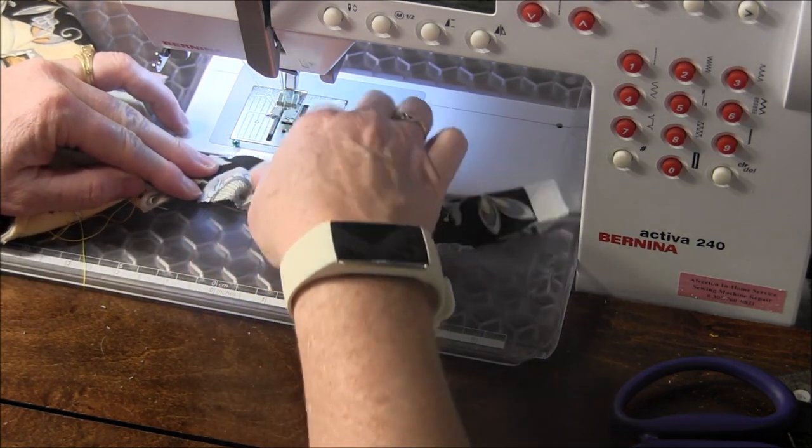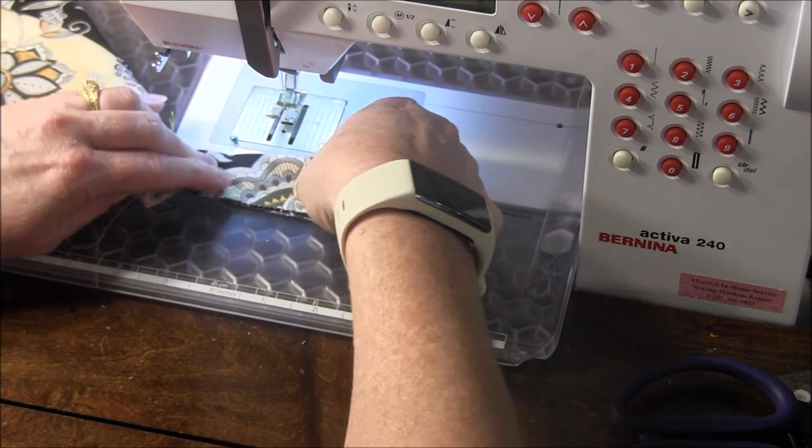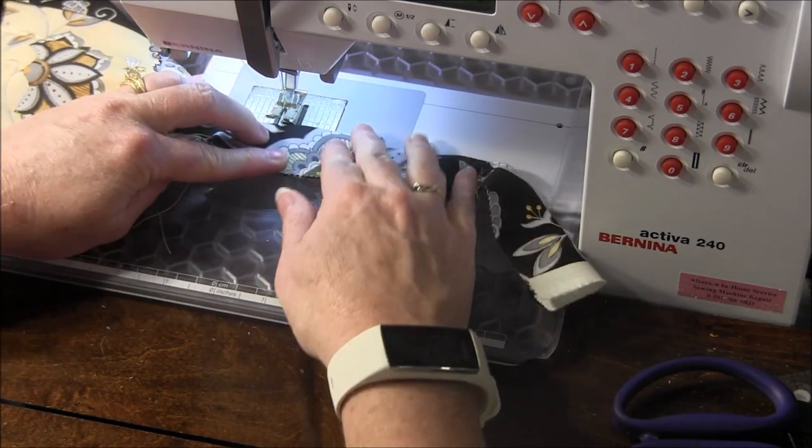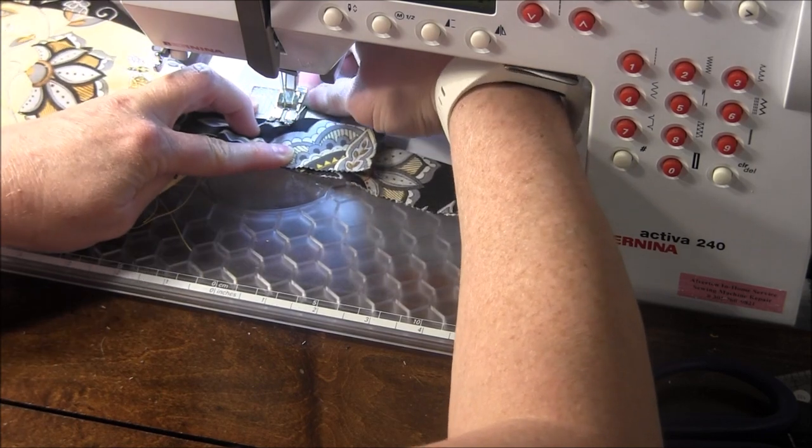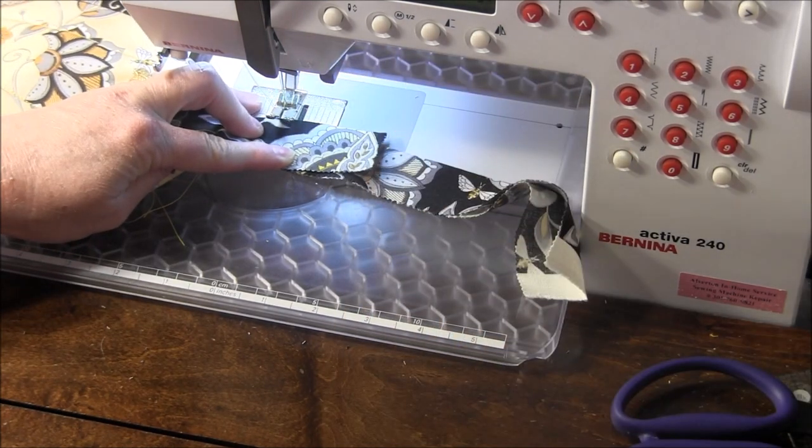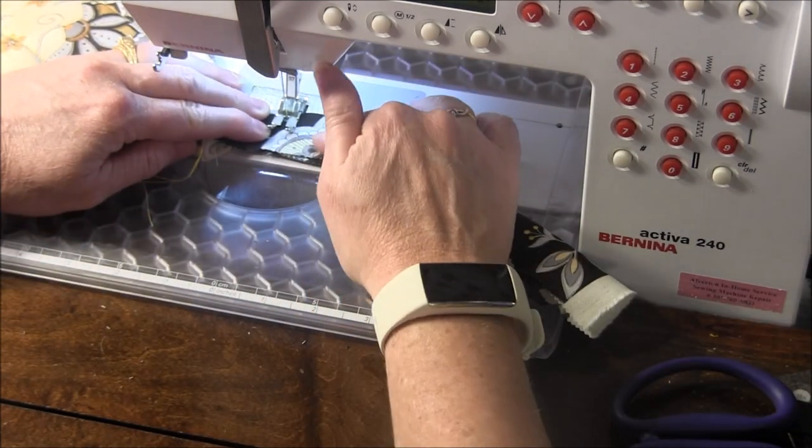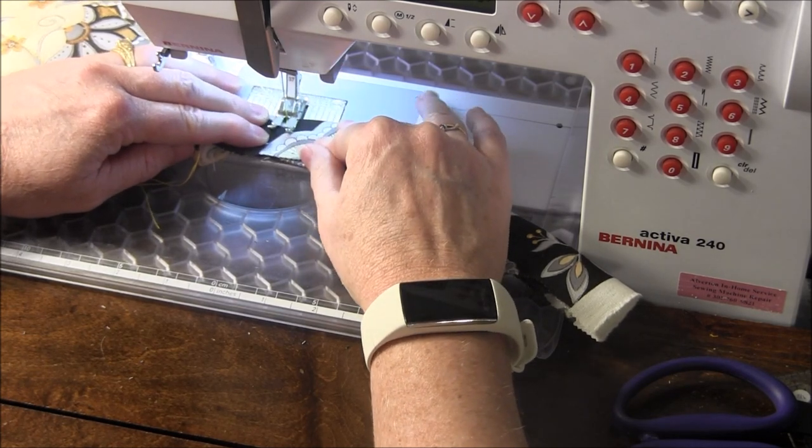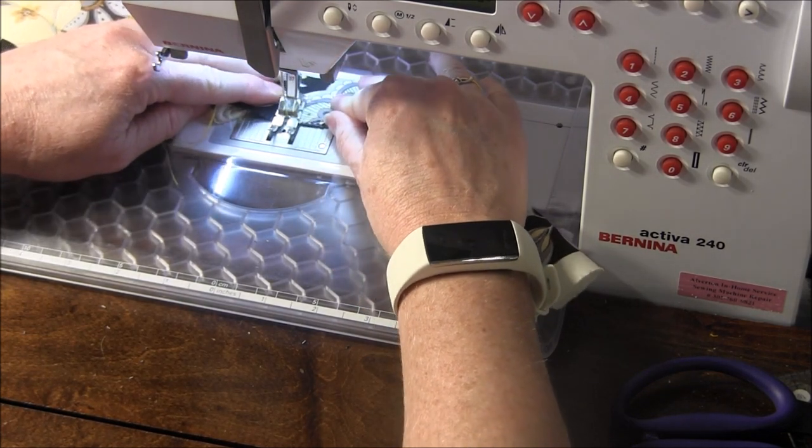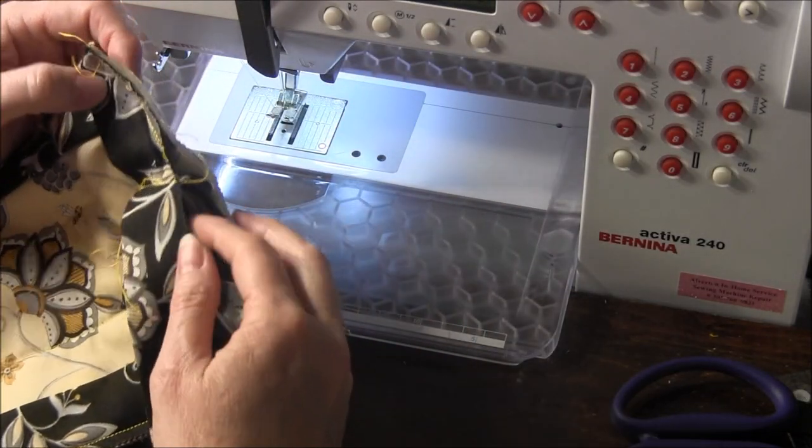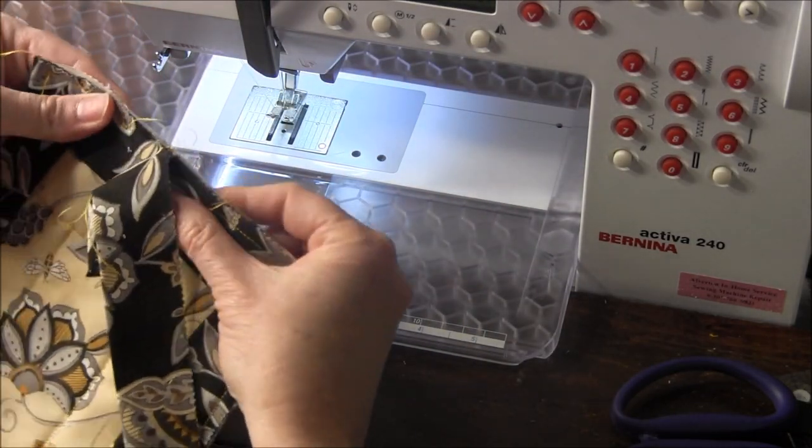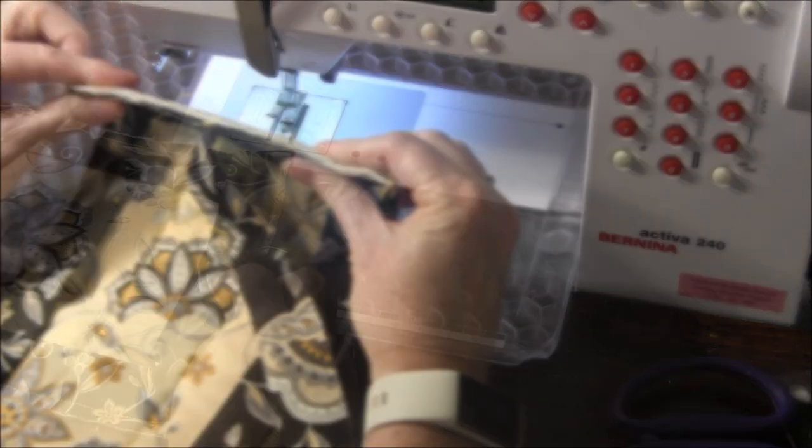And now I'm going to lay it flat on my sewing machine, and I'm going to sew right on that line. But I'm going to remove that pin before I actually sew. So before I cut it off, I want to just check and make sure. See, now it's flat.